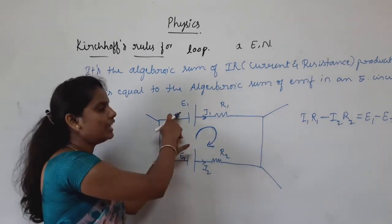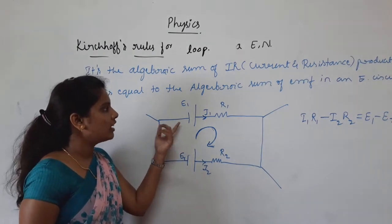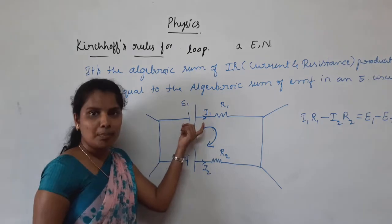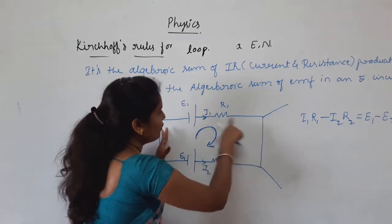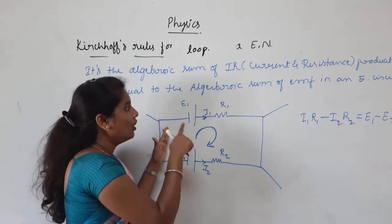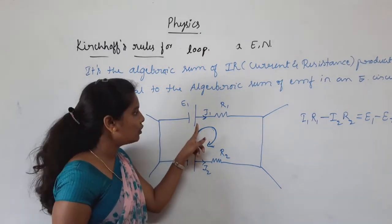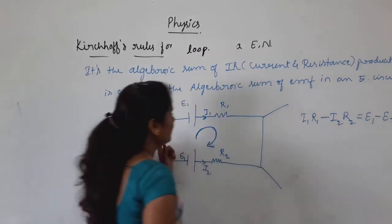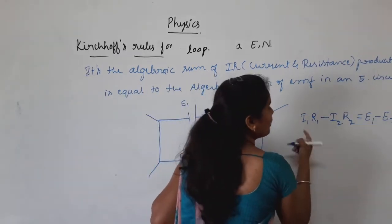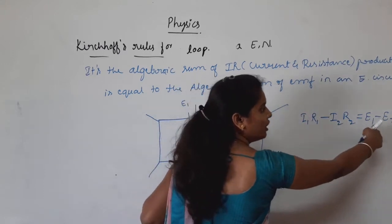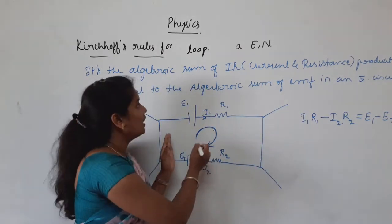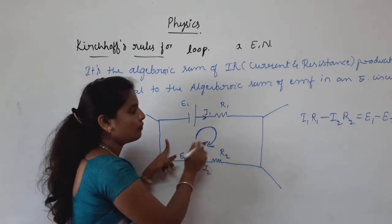When current flows through a cell from the negative terminal to the positive terminal, the EMF is taken as positive. When the current flows from positive to negative terminal, we take a negative sign. That is why I1·R1 minus I2·R2 equals E1 minus E2. This is regarding the sign convention when applying Kirchhoff's loop rule.